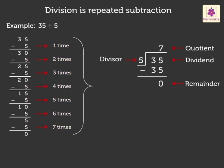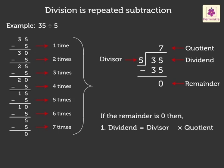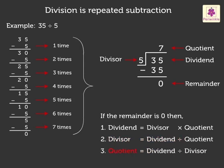Kids, remember, if the remainder is 0, then: 1. Dividend is equal to divisor into quotient. 2. Divisor is equal to dividend divided by the quotient. 3. Quotient is equal to dividend divided by the divisor.